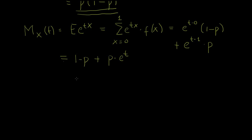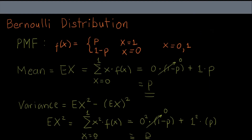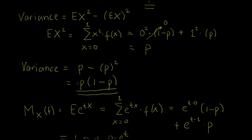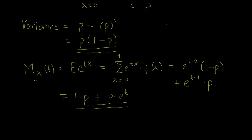So that's our moment-generating function. In summary, our mean for the Bernoulli distribution is p, for our variance we have p times (1 minus p), and for our moment-generating function we have 1 minus p plus p times e^t.